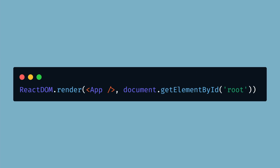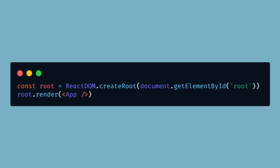With React 18 there's a new root API. Here's what you're used to seeing: we pass to ReactDOM.render our app component and then document.getElementById and our root element, so we're rendering our app component into our root element on the page. Here's the new way: we have a root variable which is equal to a new method called createRoot, this is passed our root element, and then we call root.render and pass our app component. It's accomplishing the same thing but in a different way.